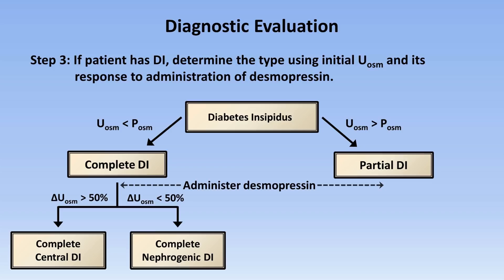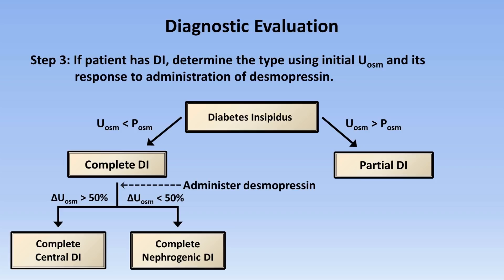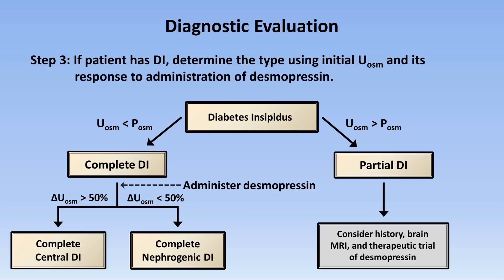With partial DI, classically people are taught that the same type of differentiation occurs, though with a different cutoff distinguishing partial central from partial nephrogenic DI. Unfortunately, that part of the classical algorithm appears to be wrong — the expected changes in urine osmolality seen when patients with partial DI are given desmopressin overlaps between central and nephrogenic DI, so you can't use that in isolation to differentiate the two. Instead, you should consider the history, look for whether the patient has a reason for either type, along with an MRI of the brain looking for pituitary and hypothalamic pathology, and even consider a therapeutic trial of desmopressin over a longer period of time.